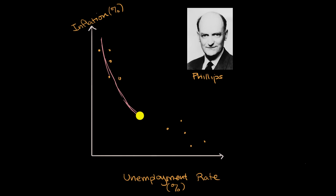Maybe it looks something like this. If we take this model, it would hold that when the economy is strong, you have high inflation and low unemployment. When the economy is weak, you have high unemployment and low inflation.